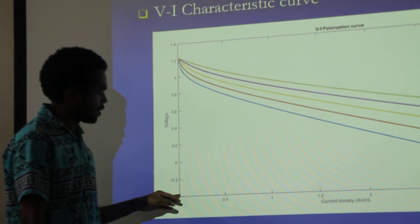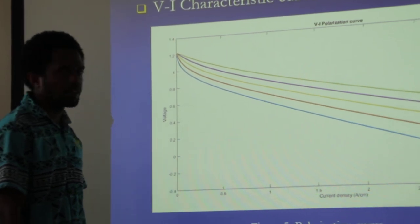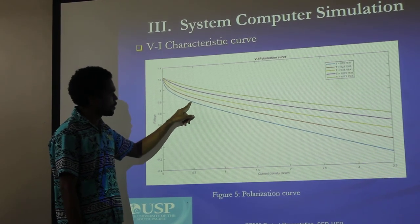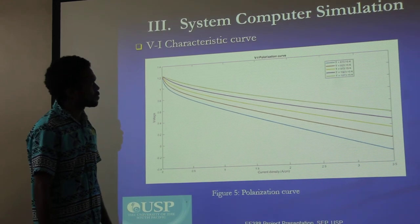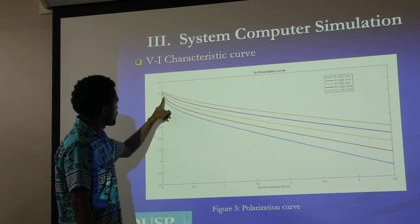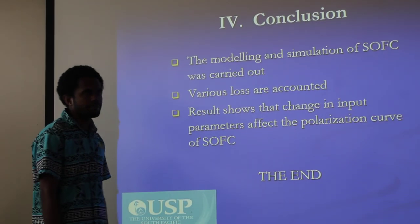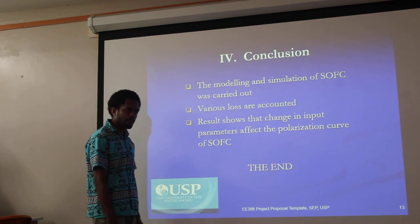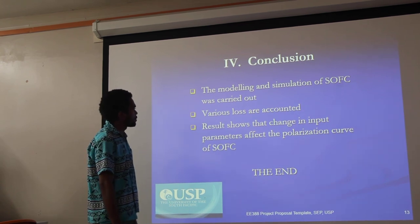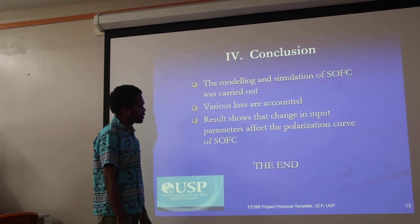From this graph, you can see that the voltage and the current density increase with increasing temperature. For example, the curve simulated at low temperature, which is 873K, has a much lower voltage compared to higher temperature curves. To conclude our presentation, this project is based on modeling and simulation of a solid oxide fuel cell, and the model has been implemented based on several losses as discussed.